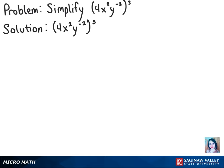So in our next step, we'll have 4 cubed times x to the 6th power times y to the negative 6th power.